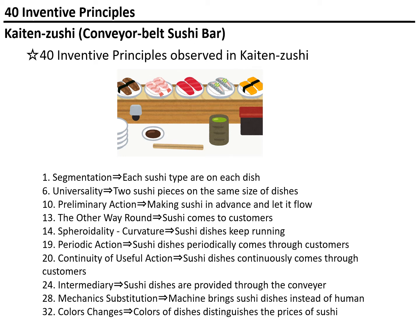For example, segmentation: each sushi type on each dish. And universality: two sushi pieces on the same size of dishes are running. In a normal sushi restaurant that is not running sushi, around 10 pieces of sushi are put on one plate. But in a kaiten zushi restaurant, each sushi type is on its own dish with two pieces per dish. Preliminary actions: sushi is made in advance and let to flow.